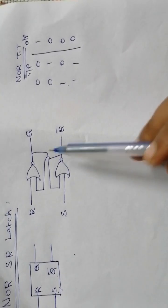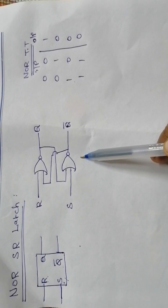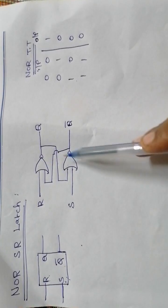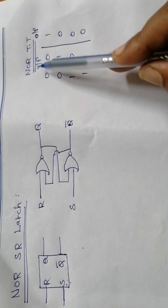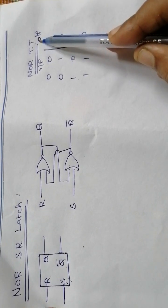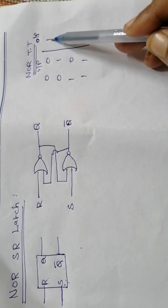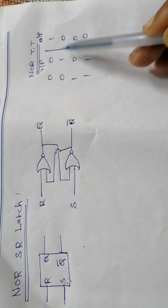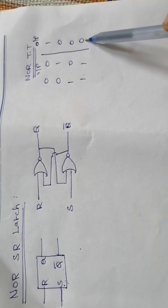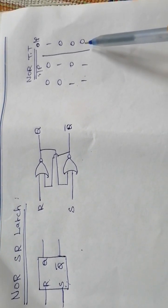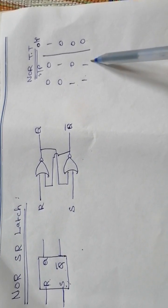Before seeing the operation of the NOR SR latch, we should first know the truth table of the NOR gate. The NOR gate truth table: inputs 0,0 — output is 1; inputs 0,1 — output is 0; inputs 1,0 — output is 0; inputs 1,1 — output is 0.